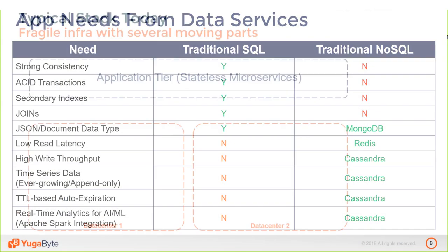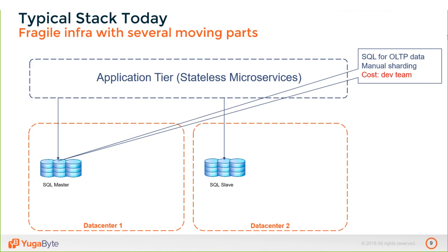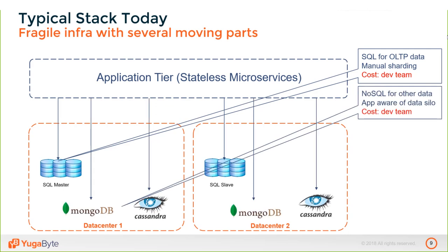Not having the best of NoSQL and SQL in a single product, what are enterprises doing today? The typical data stack has the application tier running a microservices architecture, stateless in a containerized environment. For transactional needs, people still use traditional RDBMSs. When dataset sizes exceed what a single node can handle, they deal with sharding at the application level.